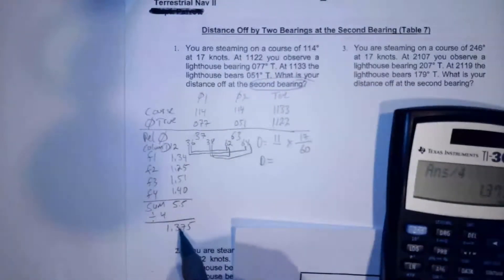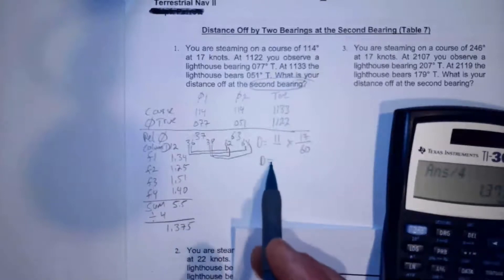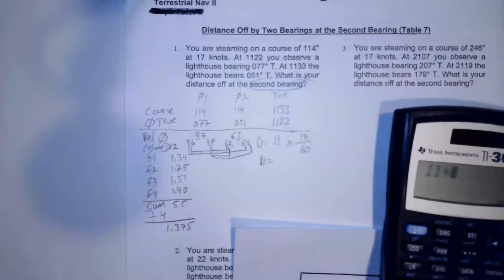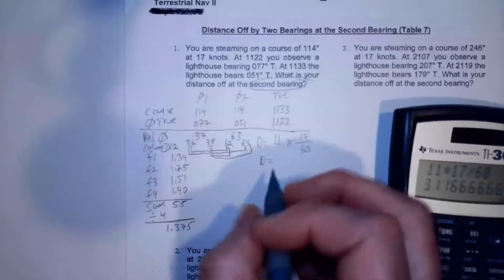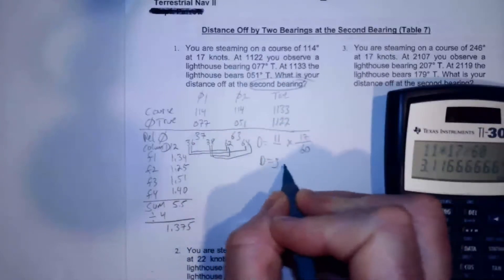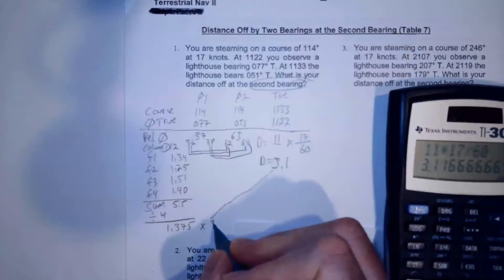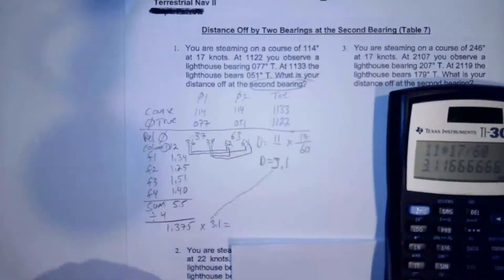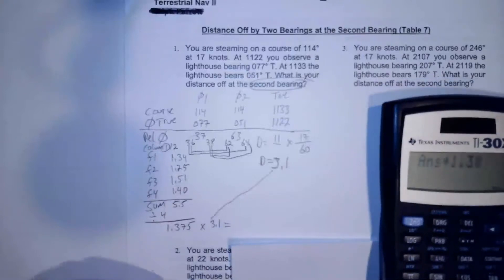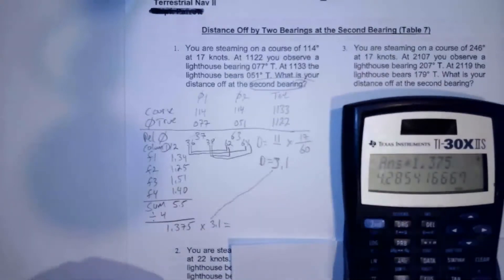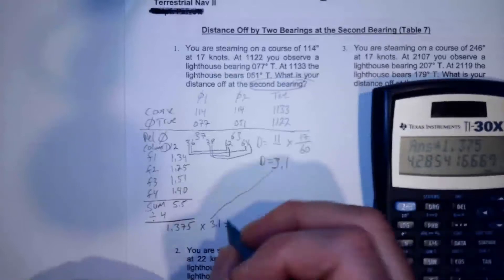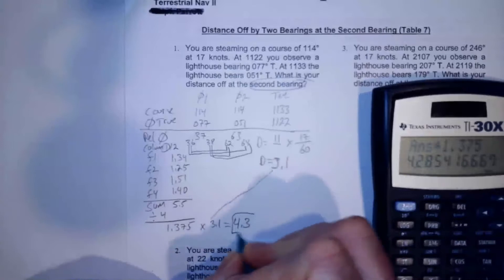For my distance off at second bearing, it's 1.375 times the distance that I ran. Now the distance that I ran was 11 times 17 divided by 60. 11 times 17 divided by 60, and that's equal to 3.11. So the distance is 3.1. Now I'm going to multiply that times the 1.375, and that's going to be my distance off. Times 1.375 equals, and it's 4.28, 4.3. So I should be about 4.3 miles off at time of the second bearing.